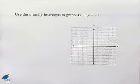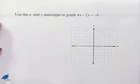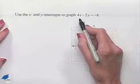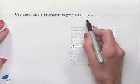Now let's look at graphing a line. Use the x and y-intercepts to graph 4x minus 2y equals negative 8. We should recognize this as being linear by its format: a number times x plus a number times y equals a number.